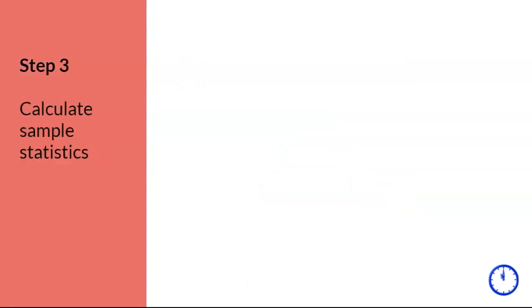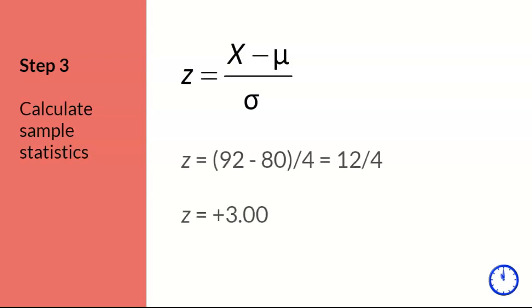Step 3. We use the modified z-score formula that allows us to compare our sample x-score with population mu and sigma. We calculate using the values given to us, and the z-score for the one patient is z equals plus 3. The box indicates the final answer that I will be looking for on a problem set and exams.